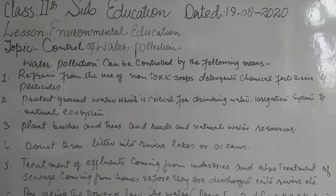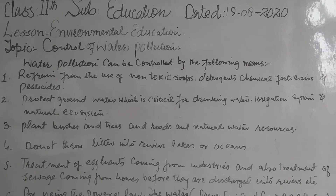Number three: prevent polluted runoff and soil erosion. Polluted runoff is caused when rain washes toxic pollutants into surface waters from sources that include city drains, farms, or logging and mining sites. Plant bushes and trees along roads and natural water resources. The roots of trees and bushes can slow the speed of runoff and erosion, protecting surface water.